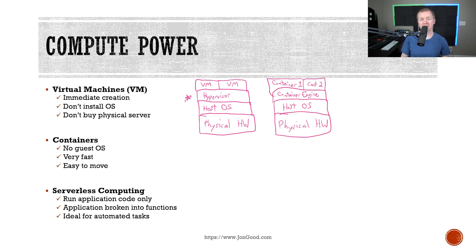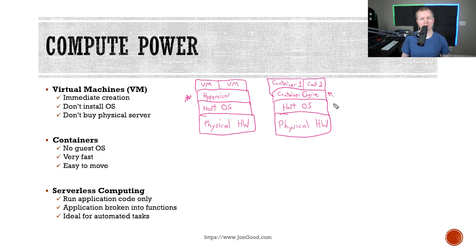Now with containers, the second use that we can use compute power for, these don't require a guest operating system. They basically use a standard runtime environment to execute applications, and this is very fast. Docker's a really good example of a container environment. We can have multiple containers on a machine, and they're very easy to move. So you can see here that we don't actually have to install an operating system on those, where a virtual machine would actually be an operating system.